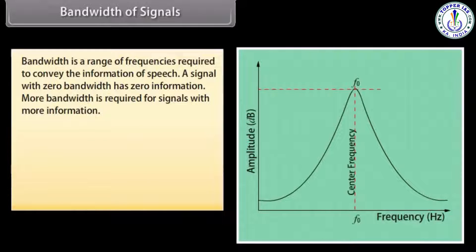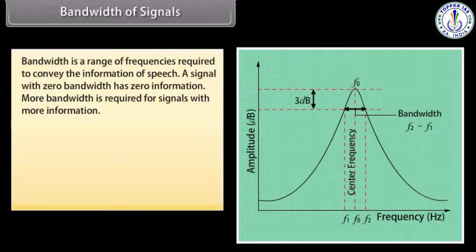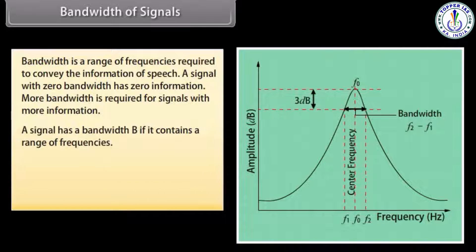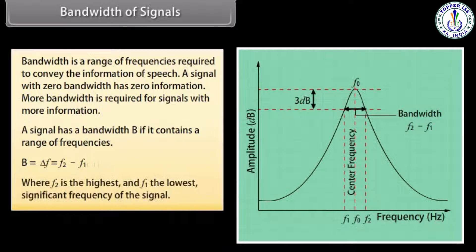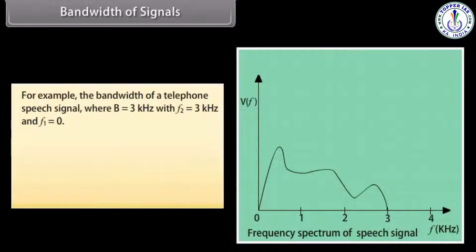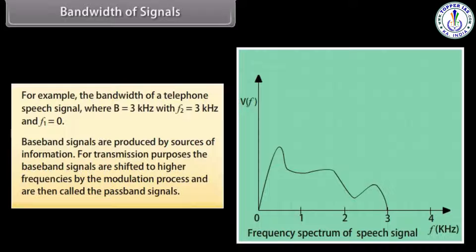Bandwidth is the range of frequencies required to convey the information of speech. A signal with zero bandwidth has zero information. More bandwidth is required for signals with more information. A signal has a bandwidth B, where B = ΔF = F2 − F1, where F2 is the highest and F1 is the lowest significant frequency of the signal. For example, the bandwidth of a telephone speech signal is B = 3 kHz, with F2 = 3 kHz and F1 = 0. Baseband signals are produced by sources of information. For transmission, baseband signals are shifted to higher frequencies by the modulation process and are then called passband signals.